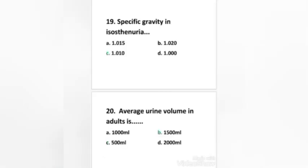Next question: specific gravity in isosthenuria is: 1.015, 1.020, 1.010, or 1.010. Right answer is option C, 1.010.